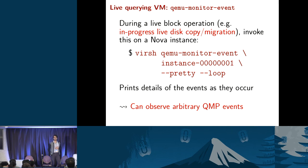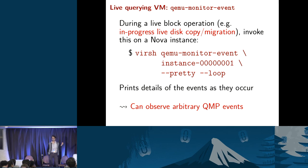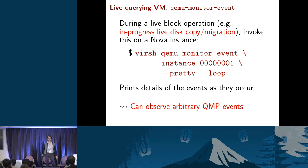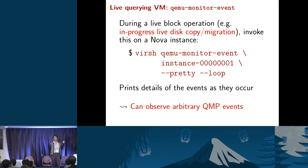For the monitor event, since live block migration is a frequently used operation in OpenStack, you can run a command in a loop to print out all monitor events happening for a specific Nova instance, allowing you to see all events for that operation.